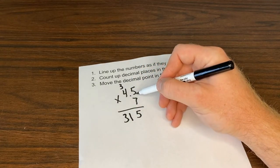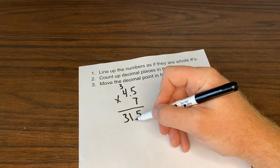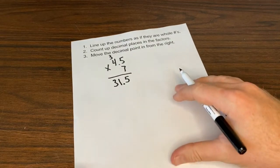I count my decimal places. There's 1 right here. I move it in one jump from the right, 31 and 5 tenths.